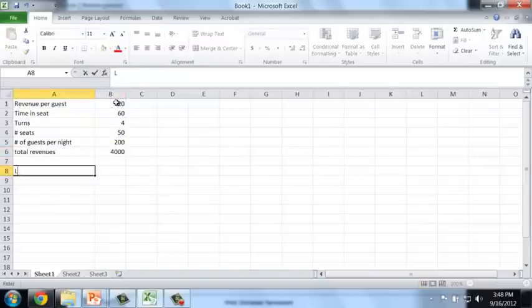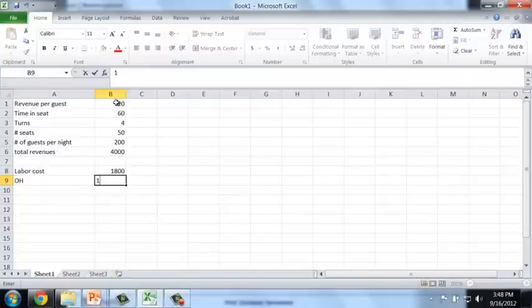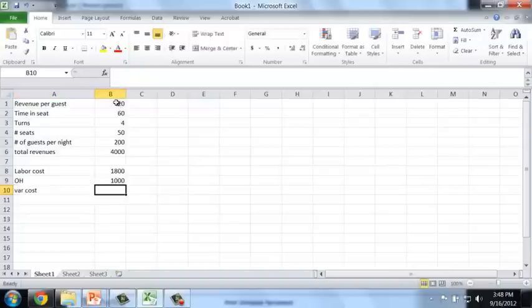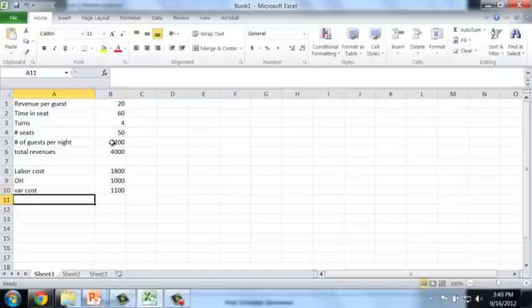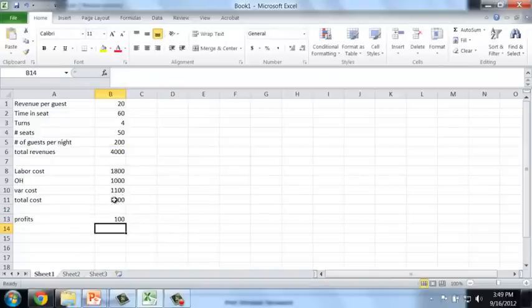Next, on the cost side, we look at the labor cost first. On the labor cost, we have 20 employees taking home 90 bucks per evening. On the overhead side, it's a flat 1,000. And on the variable cost for the food, we have to now look at the guests that we serve, 200, and multiply this with 5 dollars and 50. So, my total cost is simply these three numbers added up. And then I get profits of revenue minus cost equals to 100 dollars.